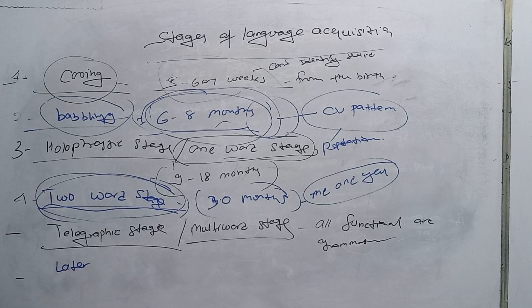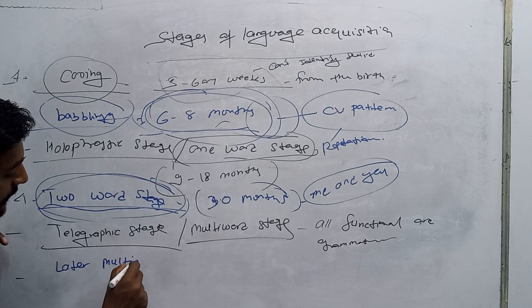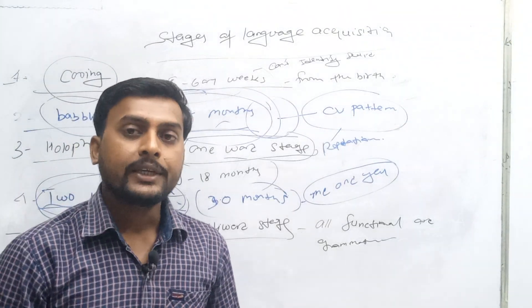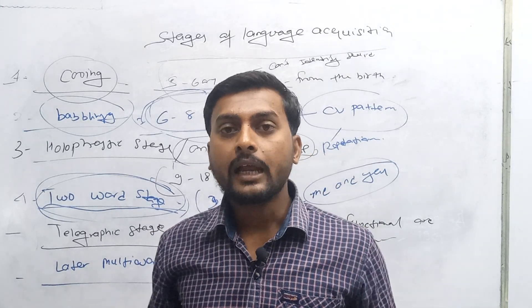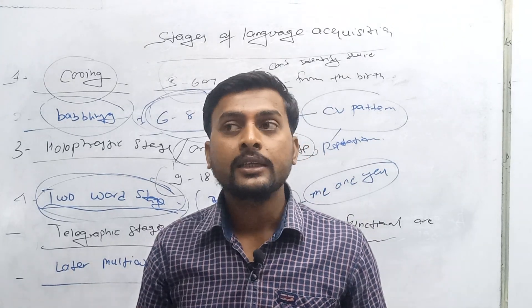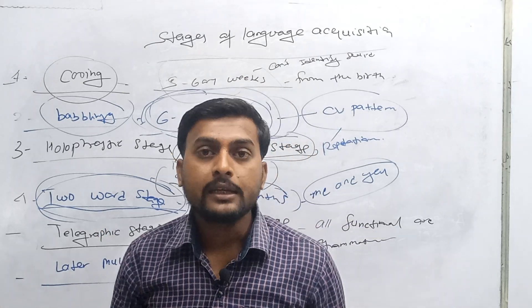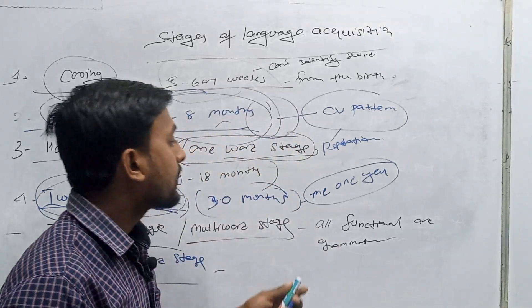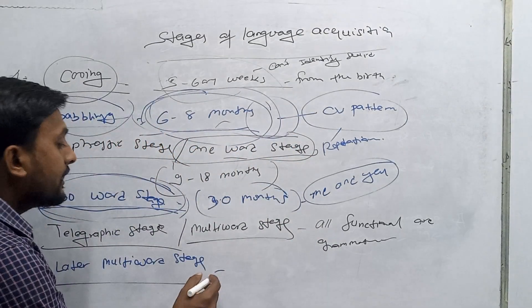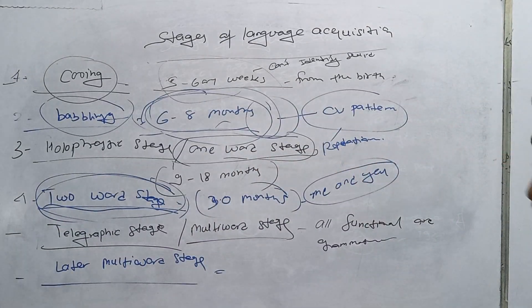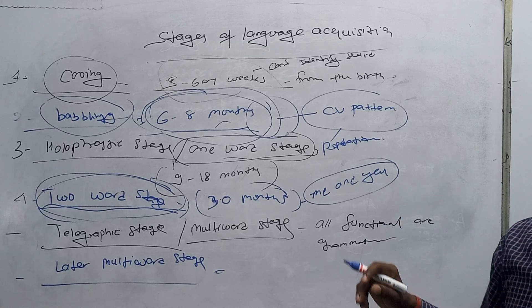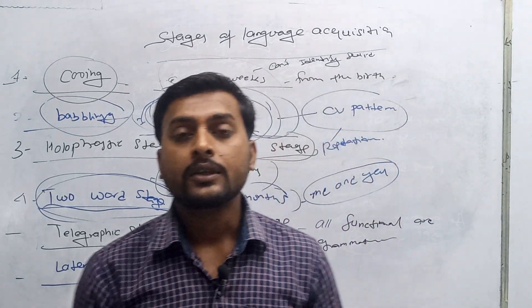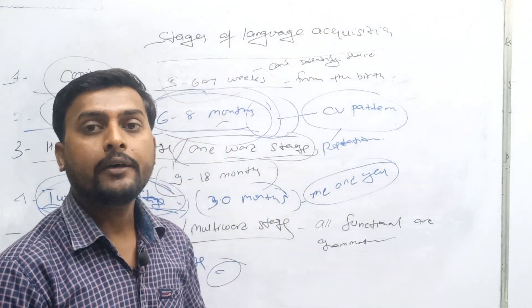There is also a later multi-word stage. In the later multi-word stage, a child is more mature. He can use good semantics. He can use correct grammatical and functional words. We can say there is more correctness in his words and sentences.